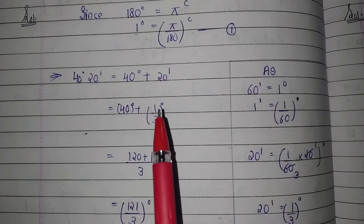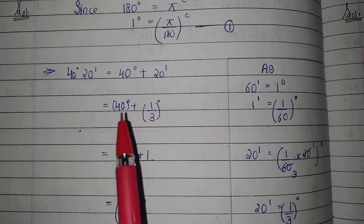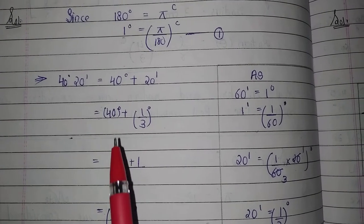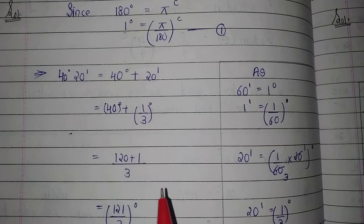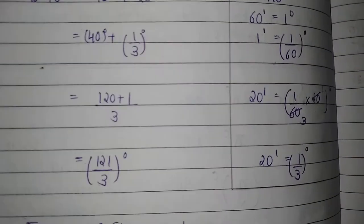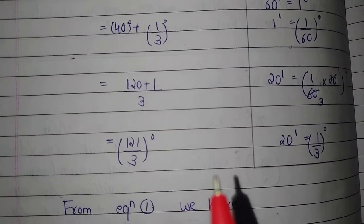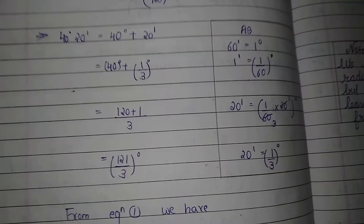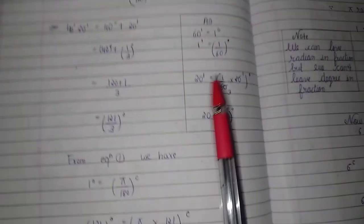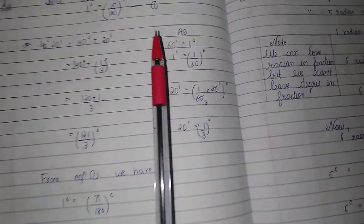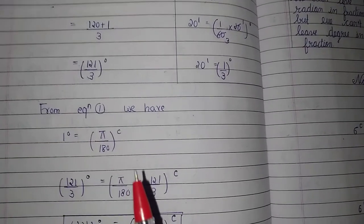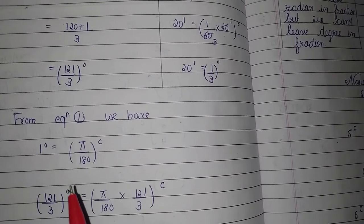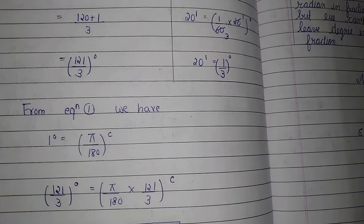So we have 40 degrees plus 1 upon 3 degree. Multiplying through by 3, we get 120 plus 1, giving us 121 upon 3 degrees. Now using Equation 1, where 1 degree is equal to π upon 180 radian, we apply the conversion.